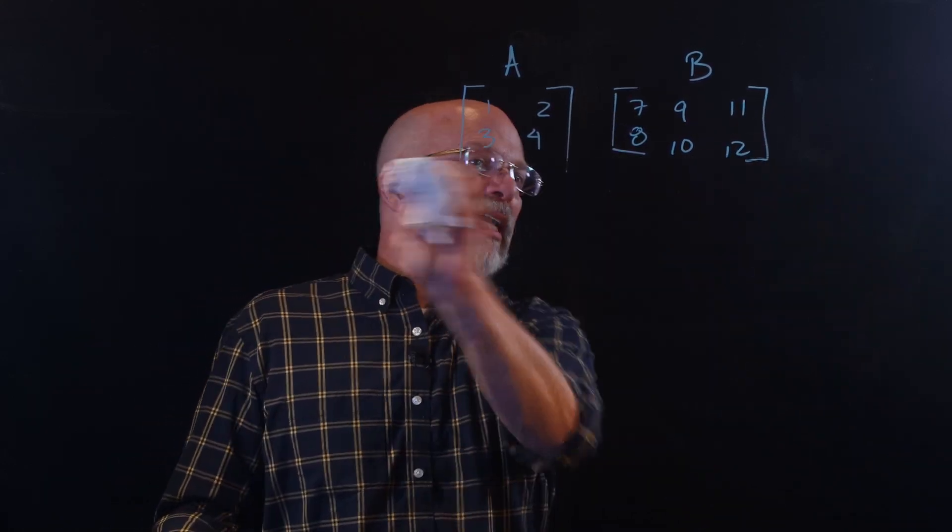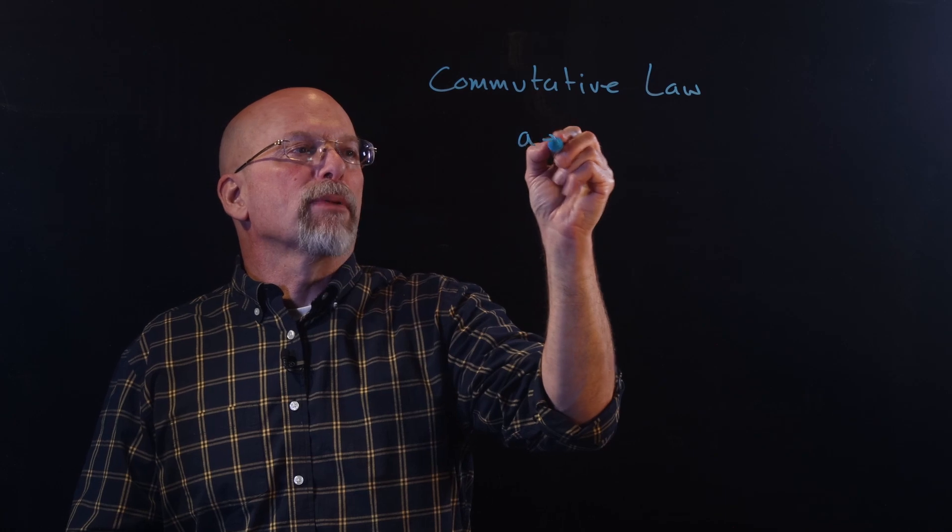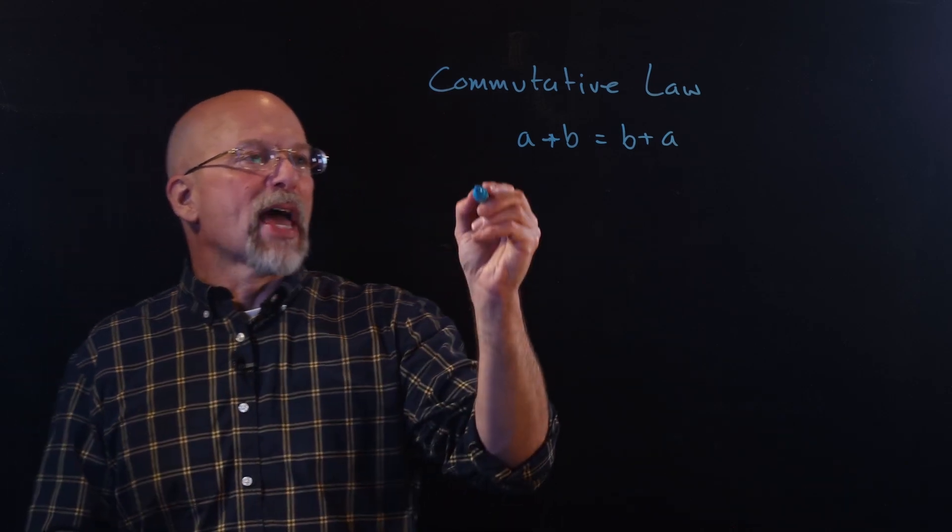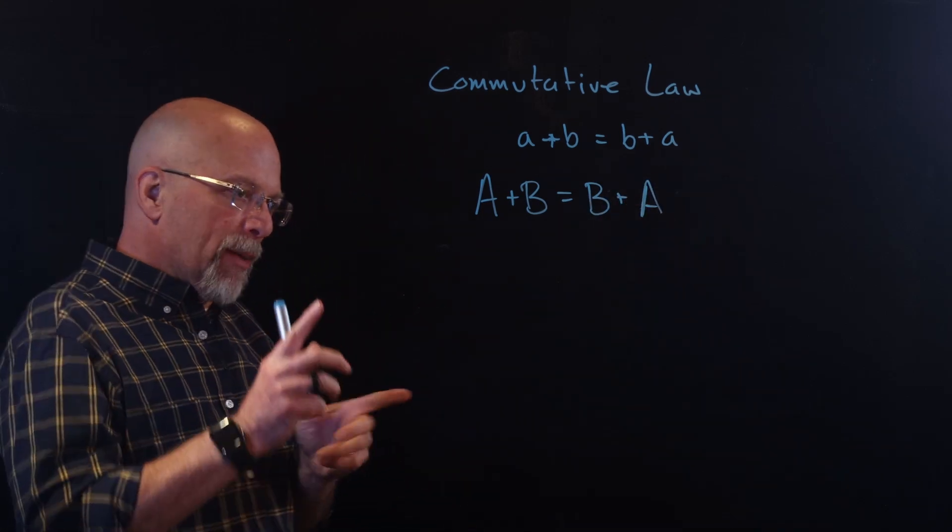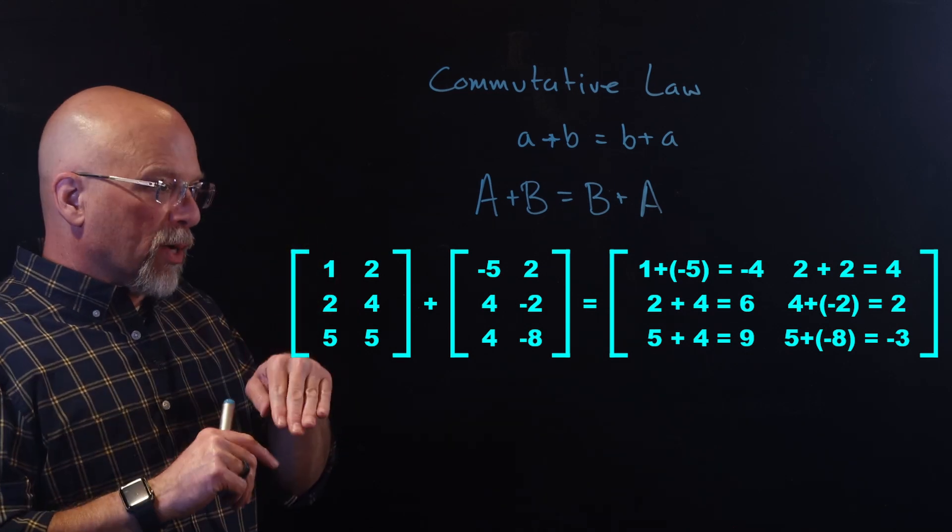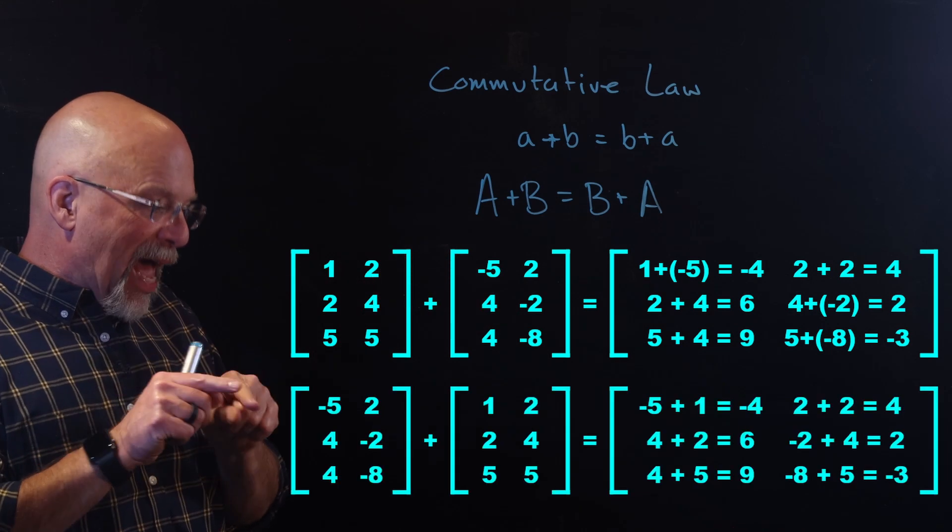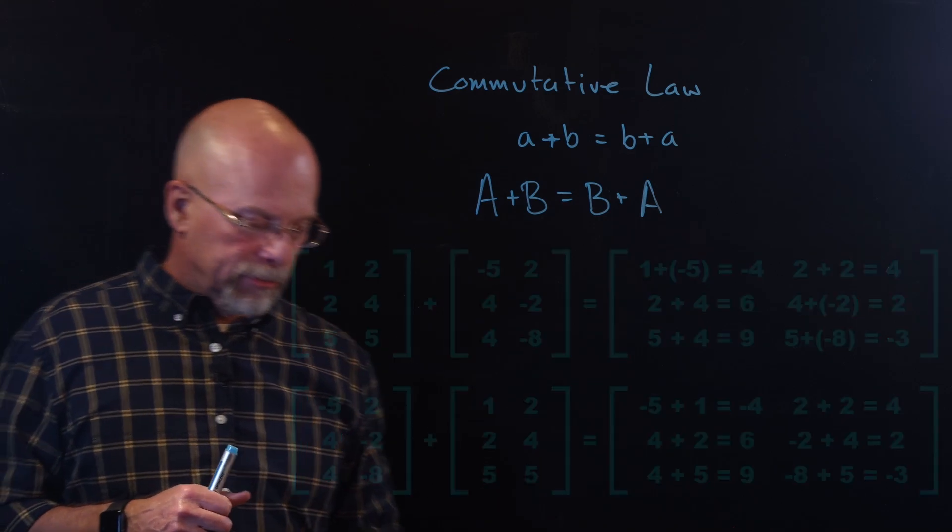Now, just like basic arithmetic, where we're adding numbers together, there are laws that are obeyed by matrix arithmetic. For example, we have the commutative law. The commutative law said A plus B is equal to B plus A. The order doesn't matter. Well, it turns out that that is true for matrices also. And it works out this way. For example, if we've got two matrices, three rows by two columns, we add them together in one order, we get a result. If we add exactly those same matrices together but swap the order, we get exactly the same result.